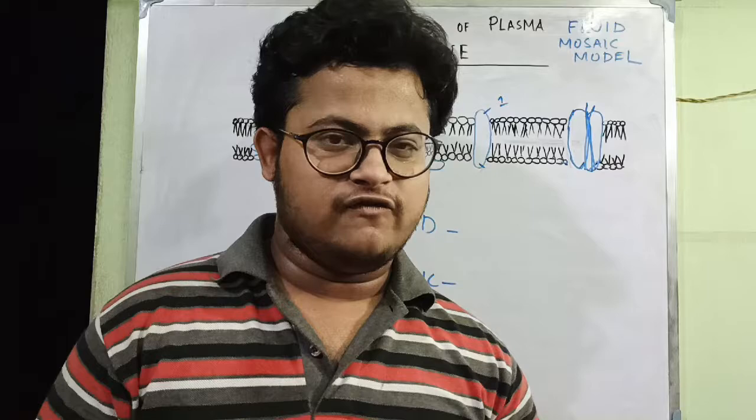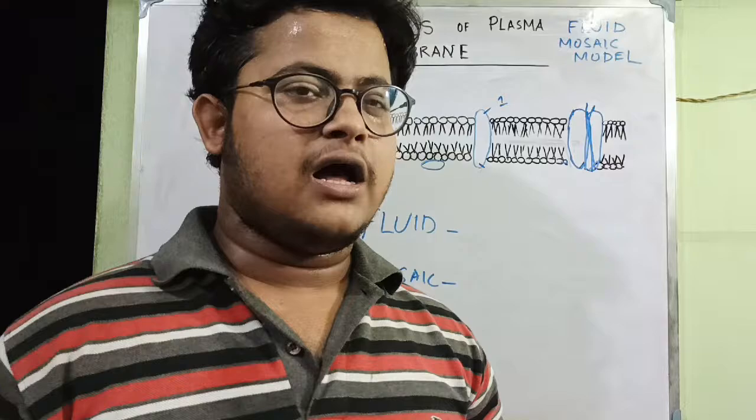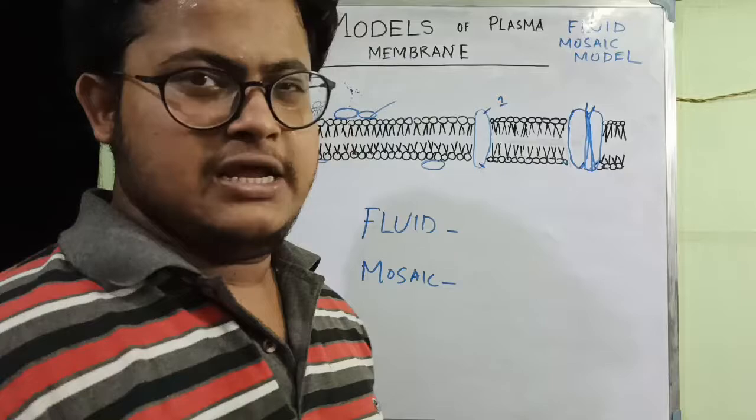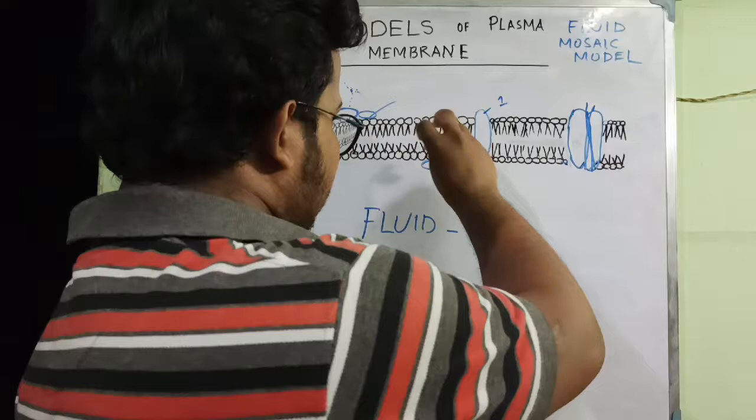Welcome to Nils Biology. In this tutorial video I am going to discuss the fluid mosaic model of plasma membrane. In the previous video we discussed the sandwich model of Danielli and Davson, and also the unit membrane model of Robertson. From these two models it is clear that the plasma membrane is made up of a lipid bilayer, with certain proteins, and the lipid bilayer is amphipathic.